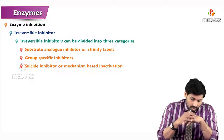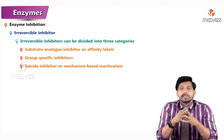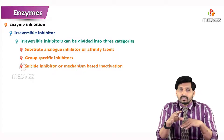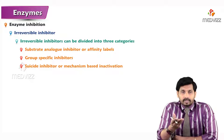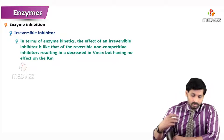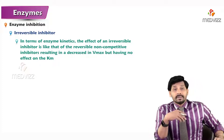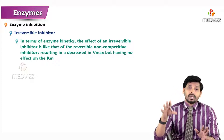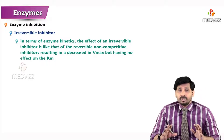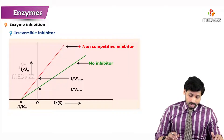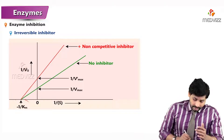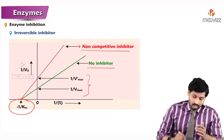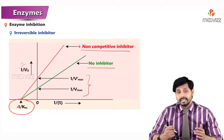The three categories of irreversible inhibitors are: substrate analog inhibitors (affinity labels), group specific inhibitors, and suicide inhibitors, otherwise known as mechanism-based inactivation. In terms of enzyme kinetics, irreversible inhibitors behave like non-competitive inhibitors, resulting in decreased Vmax but having no effect on the Km, as shown in the diagrammatic representation.